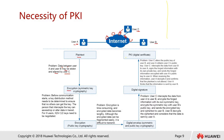Now let's talk about the second type: encryption. This is called symmetric key cryptography. Symmetric key cryptography means we use the same key on both sides. For example, if user A decides to use 'abc123,' user B will also have to use the same password — abc123. Symmetric means whatever key is used on one side is the same on the other side.